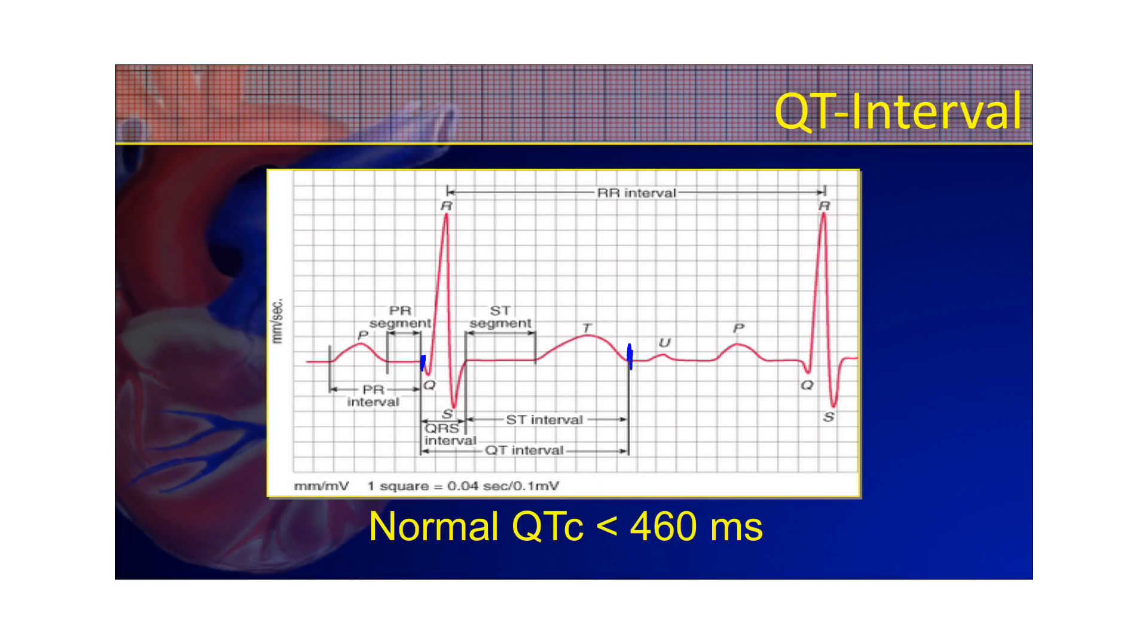And another reason to pay attention to it is if you're going to be using certain medications. It's a very common cause of the black box warning on medications, especially antiarrhythmics. Medications can actually prolong the QT interval. So you don't want to give somebody that has a borderline QT interval these medications that can prolong it, because you can actually put them into a lethal arrhythmia.